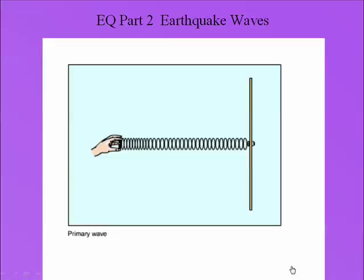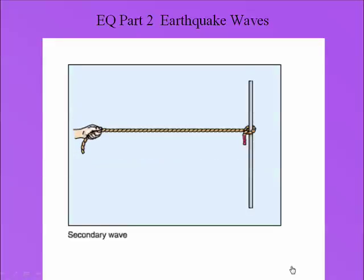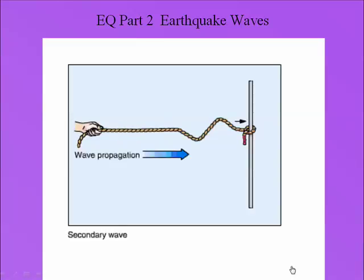Part 2: Earthquake Waves. There are four kinds of waves propagated by an earthquake. The first wave is the primary wave, a wave of compression and expansion. The second wave is a side-to-side movement, also called a shear wave.